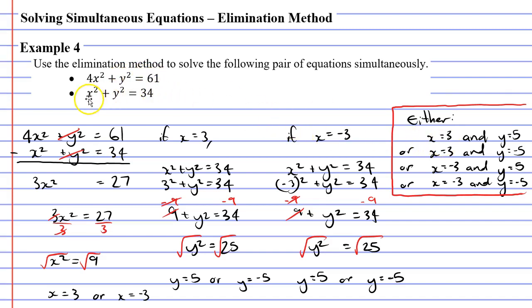Now, once again, if x is 3, so 3² is 9. y is 5, 5² is 25. 9 + 25 does equal 34. So that works for our first response here.